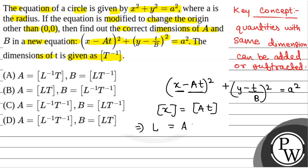So dimension of x equals L, which equals dimension of A times dimension of t. Since [t] = T⁻¹, we have [A] = LT⁻¹. This is the dimension of A.